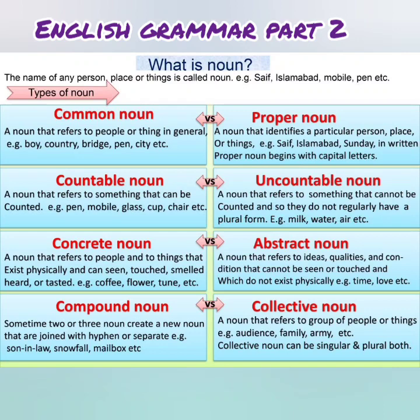The seventh is compound noun — sometimes two or three nouns combine to create a new noun, joined with a hyphen or written separately. For example: sun-in-law, snowfall, mailbox. You can see that 'snow' and 'fall' both exist individually — snow means snow and fall means to fall — but together they form a new compound noun.